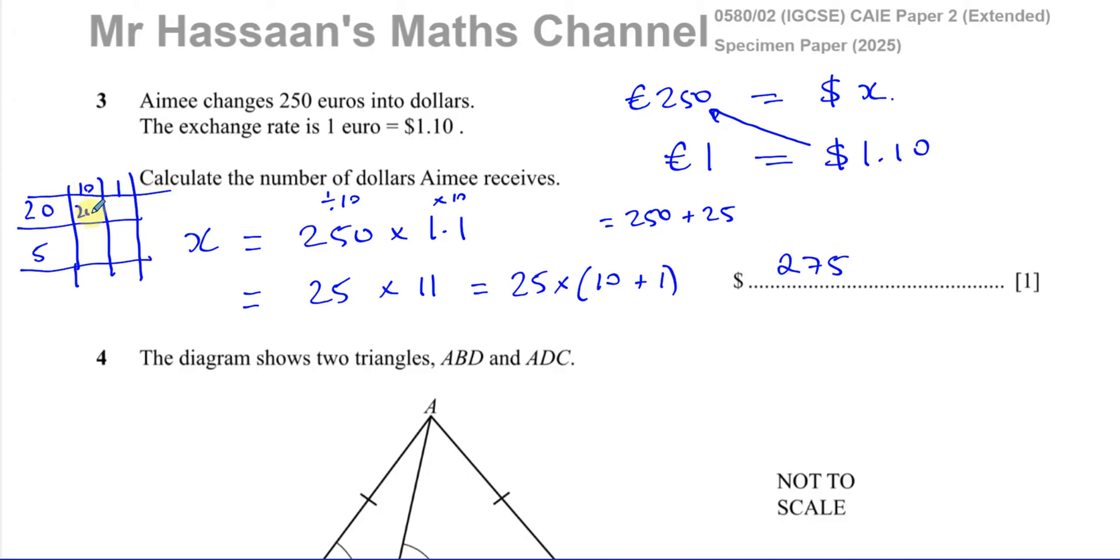So 20 times 10 is 200. 20 times 1 is 20. 10 times 5 is 50. And 5 times 1 is 5. If you add these together, you end up with 275. Okay, that's another way you can do that. 11 times 25. You can split it up into 10s and units, 10s and units. And then multiply and then add the numbers in the grid together. That gives you 275.